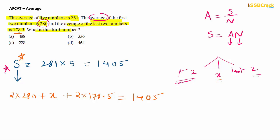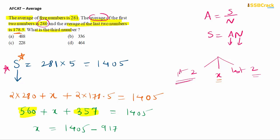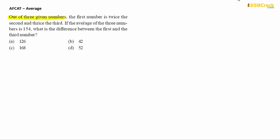Simplifying: 560 + X + 357 = 1405, so X = 1405 − 917 = 488. The unknown number's value is 488, and the answer is Option A.